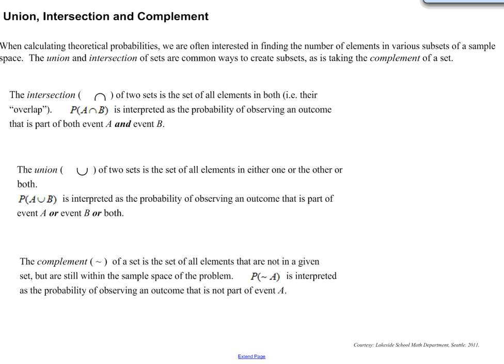So the intersection is represented here by this upside-down U. All right, so just remember that. So the intersection of two sets is the set of all elements in both, their overlap.